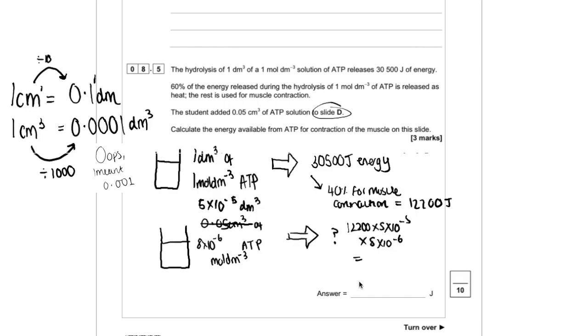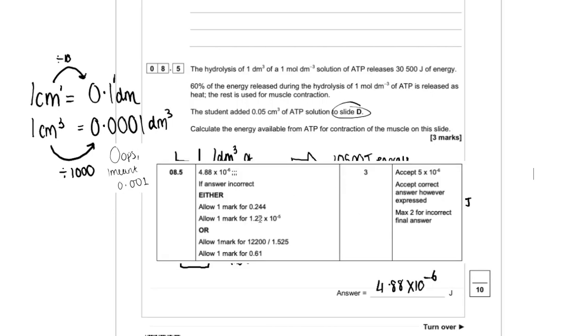So if we look at our mark scheme, we can see that even if you got part of the way and you perhaps didn't change the units correctly, or you didn't look back on the other page and realise it was 8 times 10 to the minus 6, then you could have still got one or two marks.